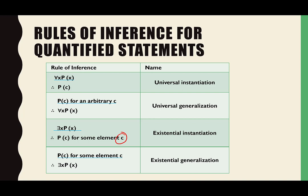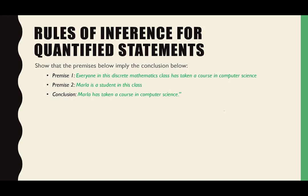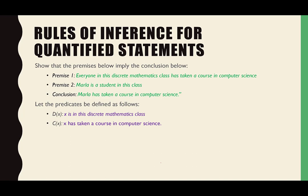I think the last one you'll agree with pretty easily: if P(c) is true for some element c, then there exists some element where P(x) is true — I just told you it's c. So let's take a look at this example: 'Everybody in this class has taken a course in computer science' and 'Marla is a student of this class' — therefore 'Marla has taken a course in computer science.' With our human brains that's obvious, but we need to look at it in terms of how we'd do it as a proof when it's not as obvious.